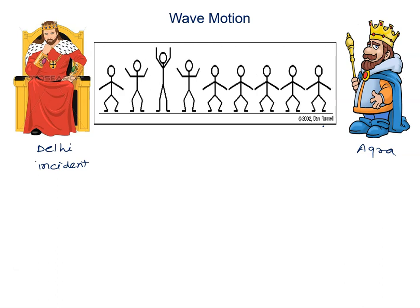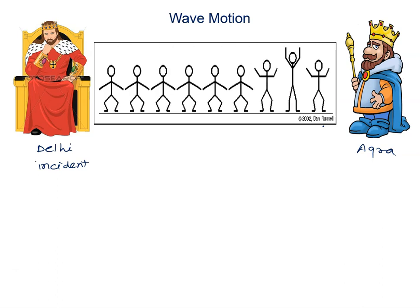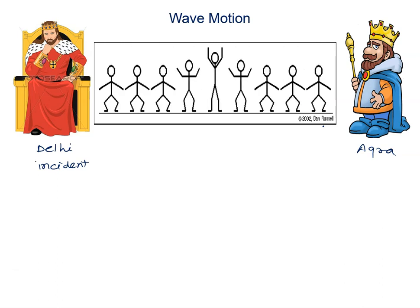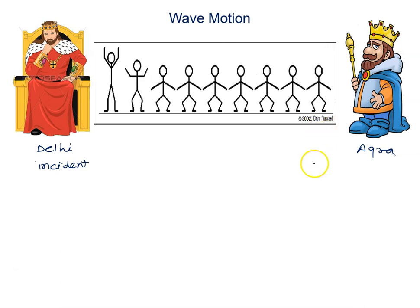As the incident happened in Delhi, the person who was observing that situation started to beat the drum. Next person after hearing the sound of the drum started to beat. Then next to next, next to next, finally the person who was near to the king of Agra started to beat the drum and the Agra king got the information.